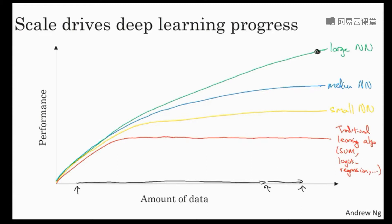So a couple observations. One is, if you want to hit this very high level of performance, then you need two things. First, often you need to be able to train a big enough neural network in order to take advantage of a huge amount of data. And second, you need to be out here on the x-axis. You do need a lot of data.